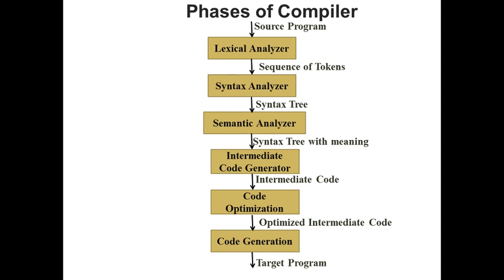In my previous two videos of part 1 and part 2, I discussed about the six phases of compiler, where the lexical analyzer phase takes source program as input. It generates a sequence of tokens, which is then passed to syntax analyzer. The syntax analyzer phase generates a syntax tree or parse tree, and that is taken as input by semantic analyzer phase.